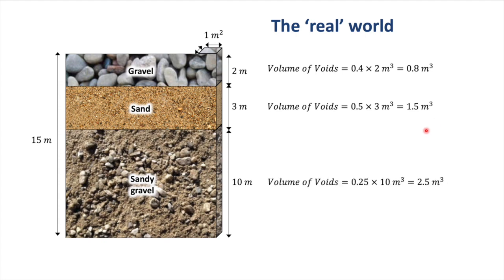And for our sandy gravel, it is 10 meters thick, so it's 0.25 times by 10, which is 2.5 cubic meters. Notice that the total void space is 2.3 cubic meters for the well-sorted gravel and sand, which make up the top 5 meters, and only 2.5 cubic meters for the 10 meters of sandy gravel below.